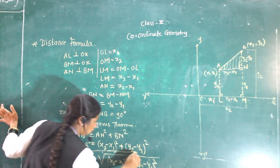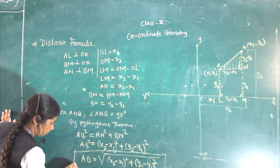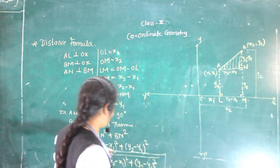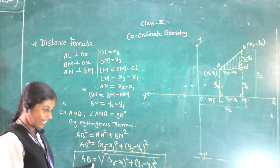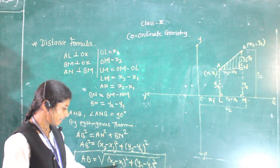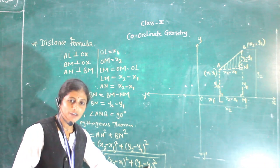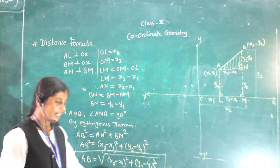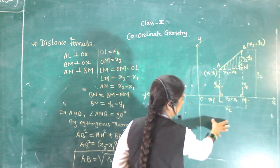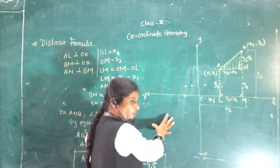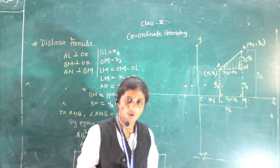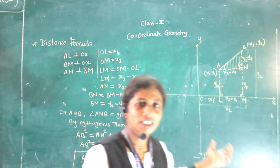This is called the distance formula. When we have to find the distance between points A and B — or any two points — the distance equals √((x2 - x1)² + (y2 - y1)²). This formula works for points in any quadrant.